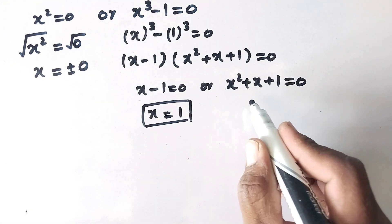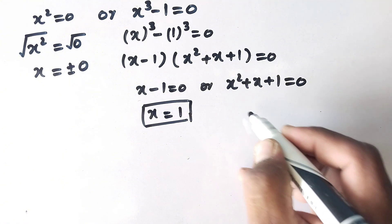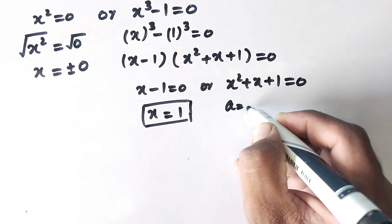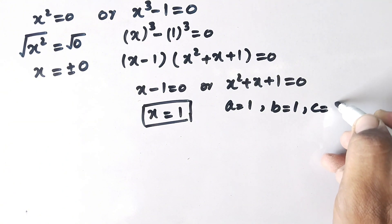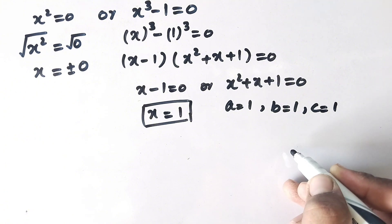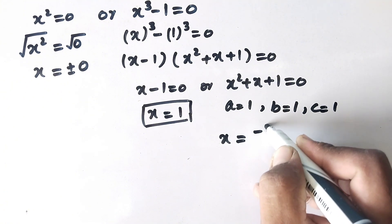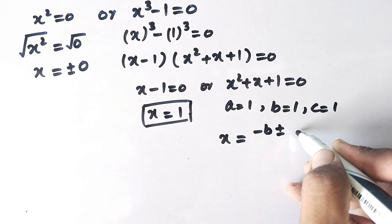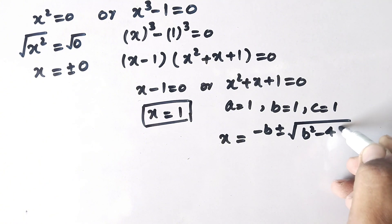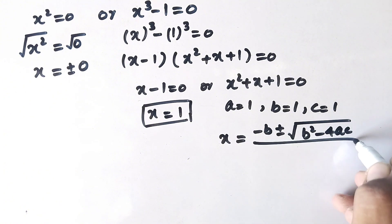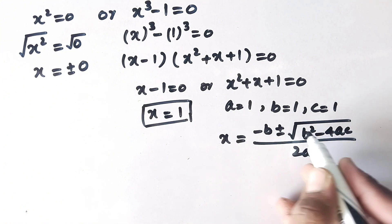Here we have a quadratic equation, so we will solve it further using the quadratic formula. So a is equal to 1, b is also 1, and c is also 1. Then the quadratic formula for the value of x is minus b plus or minus square root of b squared minus 4ac over 2a.